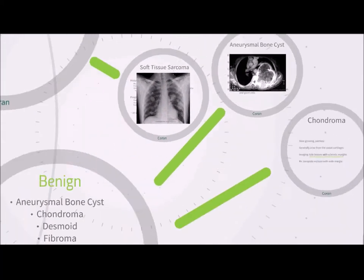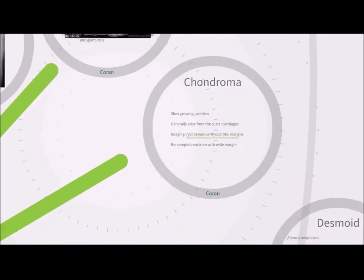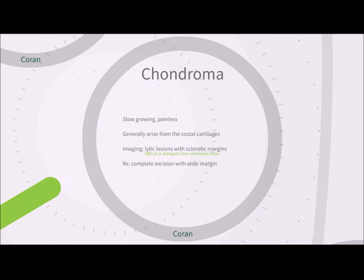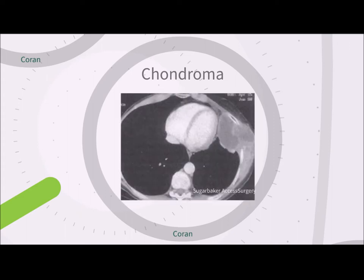Chondromas are cartilaginous tumors that tend to be slow-growing and painless, generally arising from the costal cartilages at the anterior chest wall at the costochondral junction. On imaging, lytic lesions with sclerotic margins are seen, and these can be very difficult to distinguish from chondrosarcomas by imaging alone. Treatment is complete excision with a wide margin in case there is a sarcomatous component. The lesion shown is in the anterior chest wall at the costochondral junction, as expected.